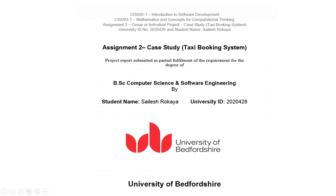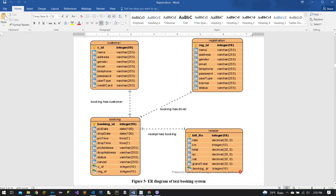To make this system work fully, I use the SQLite database to store required information and I use Python TKinter module for the GUI. You can see here on my computer screen there are four tables: customer, registration, booking, and receipt.